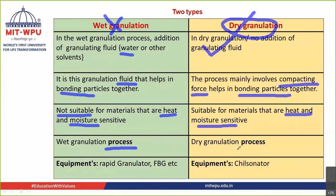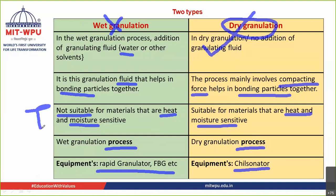In wet granulation, you mix the powders together, add the granulating fluid containing binder, form a dough, pass it through a sieve, and get the granules. In dry granulation, you mix the powders together, compress them, break them down, and get granules. The equipment used in wet granulation includes the rapid granulator and fluidized bed granulator. The equipment used in dry granulation includes the chilsonator. These equipment will be studied in the tutorial.